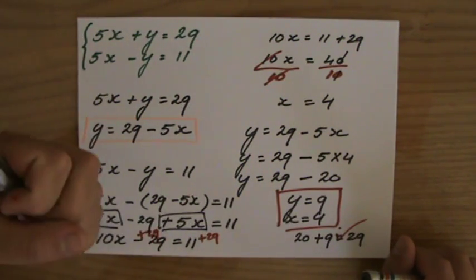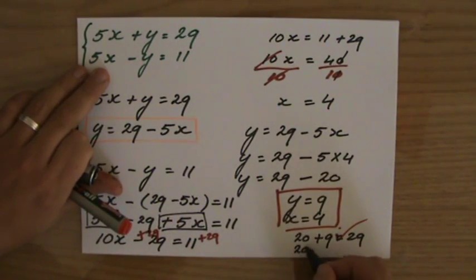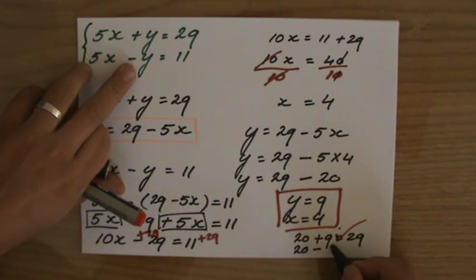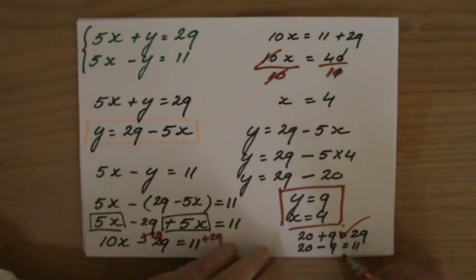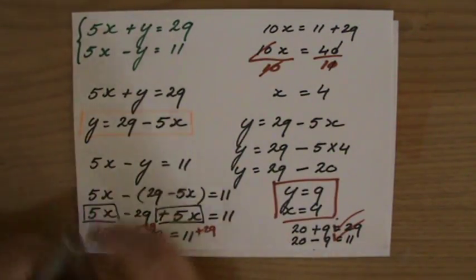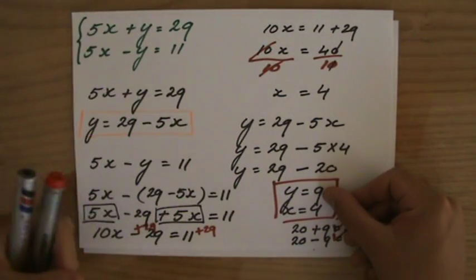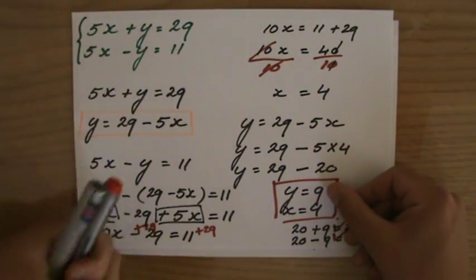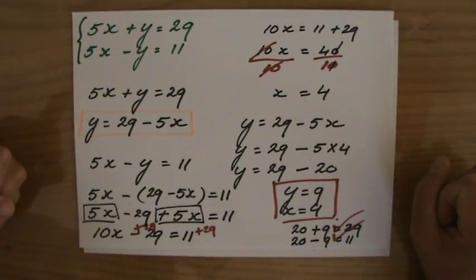And the second one, because we have to check both of them, 5 times x again, 5 times 4, so that is 20. Now, we're going to take away y, 9, and that should equal 11, it says. 20 minus 9 is indeed 11. So now it is time to high-five myself, because I found the solution. I've worked out, I've written out all my workings. The only correct solution for these equations, and solving them simultaneously, is y is 9 and x is 4. And both of them are correct.